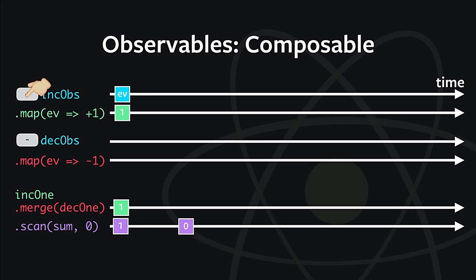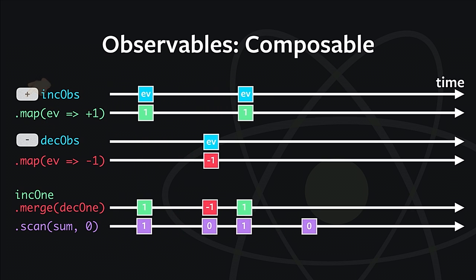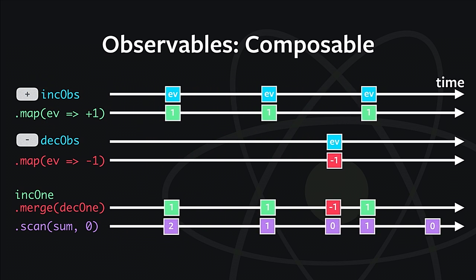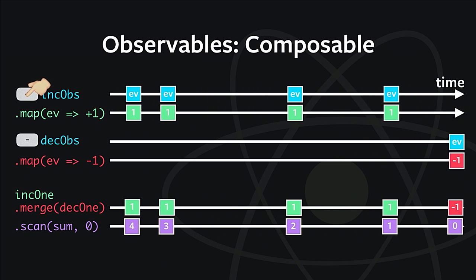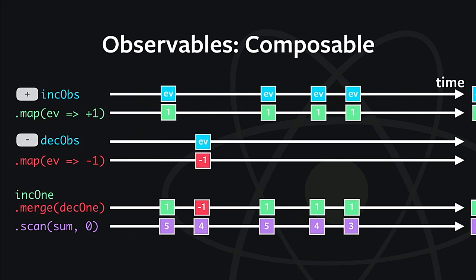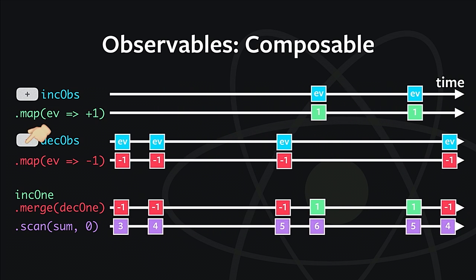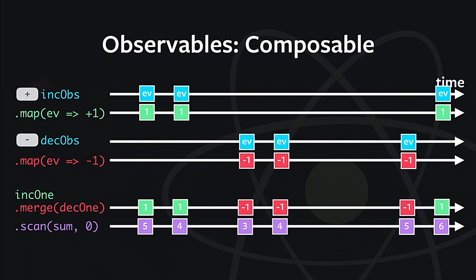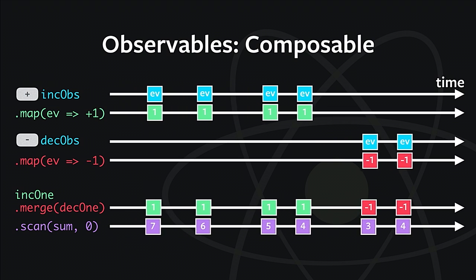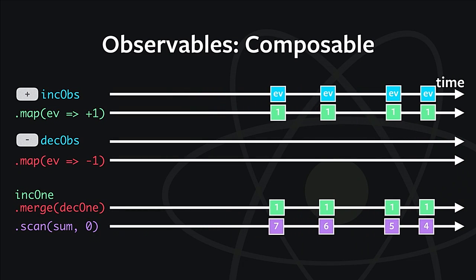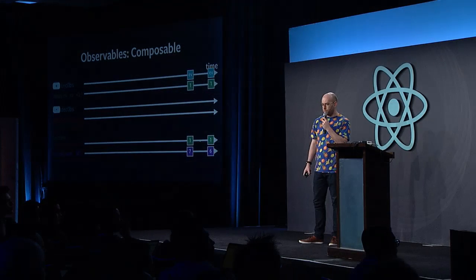And finally, observables are also composable. So here we have two buttons. And every time we click on the top button, we're going to take that event. We're going to map it to a plus one. And every time we click on the bottom button, we're going to map that to a negative one. And then we're going to merge them together. So that we have these two streams of plus ones and minus ones. And we're going to create a brand new stream of just plus ones and minus ones. It's a single stream. And then the last one, we're doing that reduce, where we keep a running count.